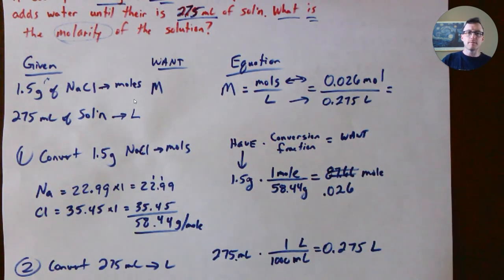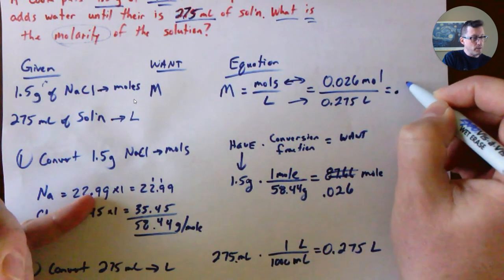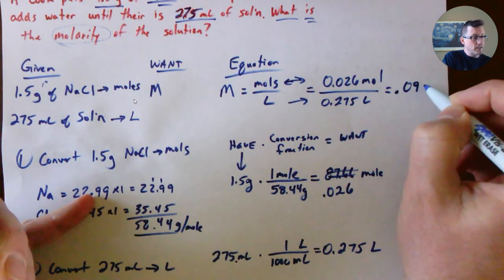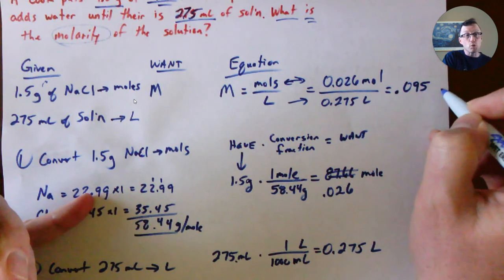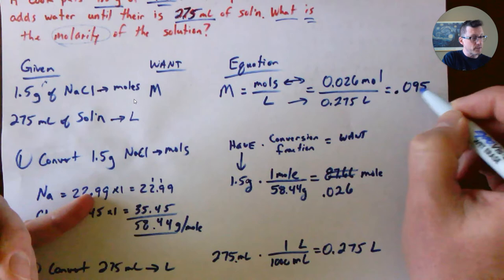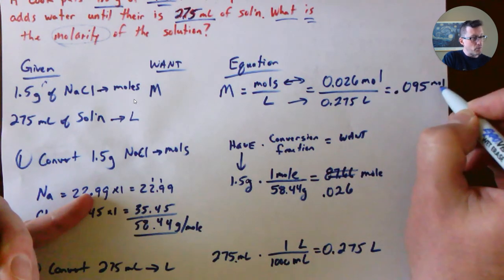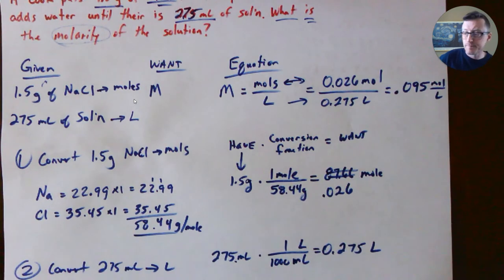Now I solve: 0.026 divided by 0.275 gives 0.09. I'm going to go at least two non-zero decimal places. My units do not cancel, so the units are moles over liters. That's another molarity type question.